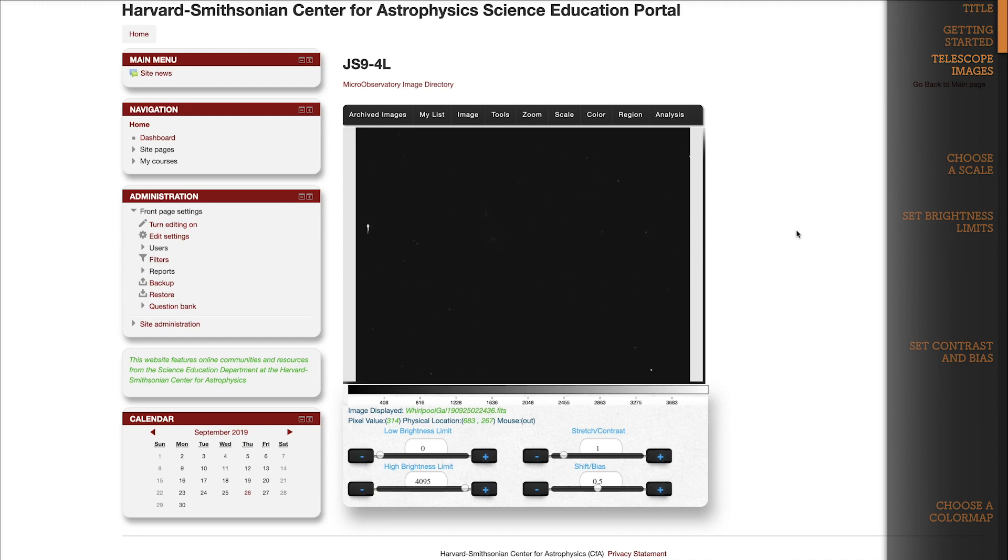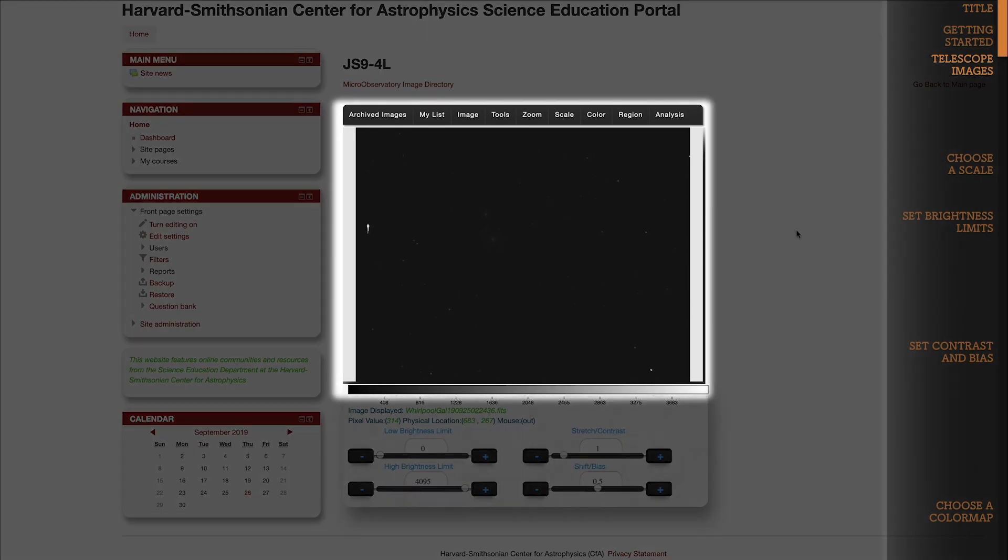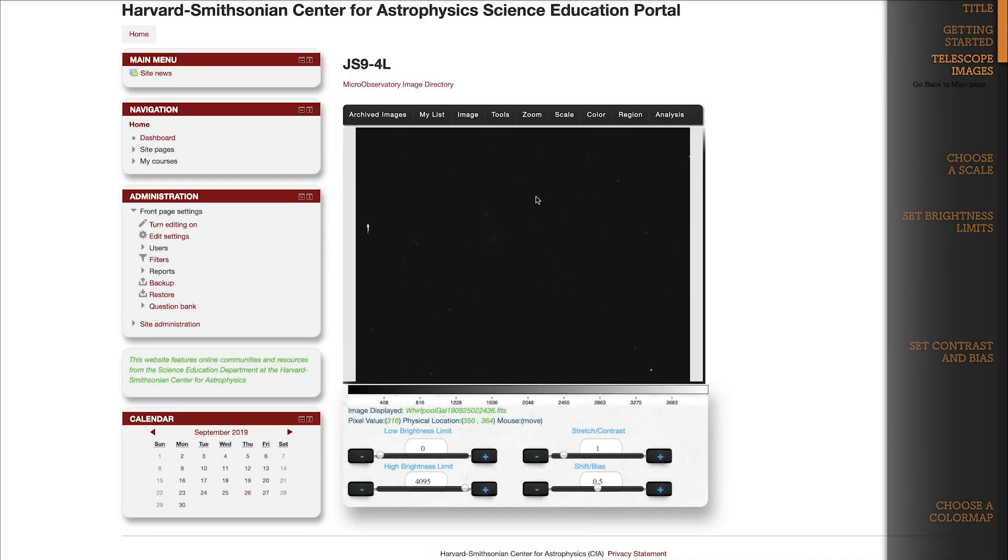With telescope images, you get incredibly specific information about the brightness of each point in the sky. Like this point here, and this point here. And since there are so many stars and galaxies and gas and dust, the brightness of each point is probably different from the point next to it.